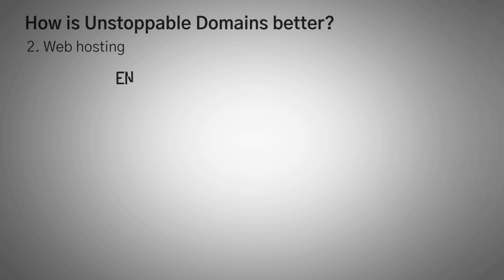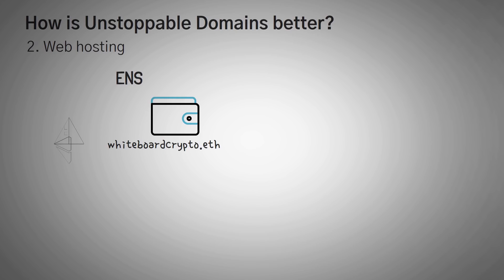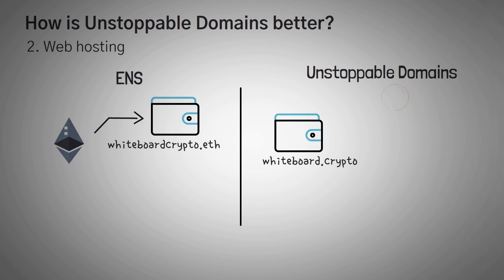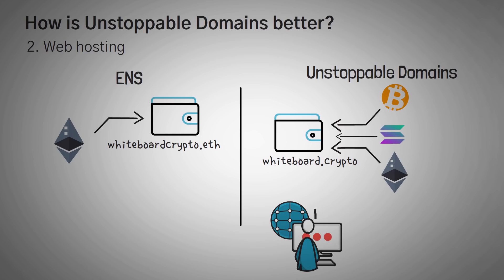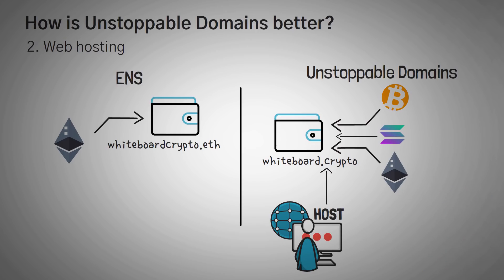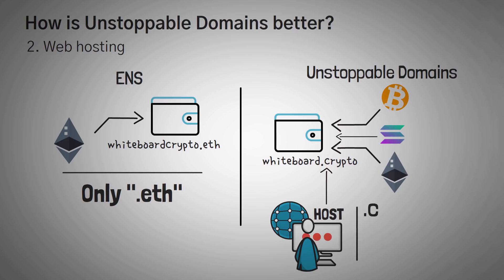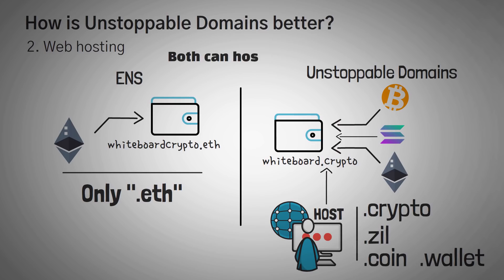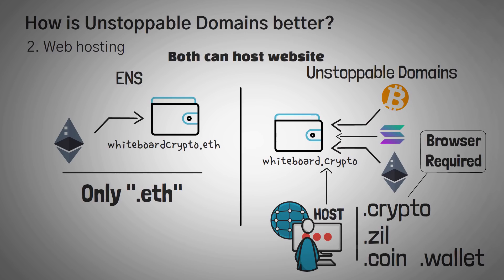Next up is web hosting. With ENS domains, the idea is mostly a simple wallet that reroutes your Ethereum address. With an Unstoppable Domain, you can get a wallet name that reroutes to many other coins, plus you literally are getting a domain name, which means you can host an actual website. ENS also only lets you claim .eth addresses, while Unstoppable Domains lets you claim .crypto, .zill, .coin, .wallet, and a few others. One thing to note is that for both of these domain services to host a website, you must use a browser that supports the extensions like .crypto or .eth.